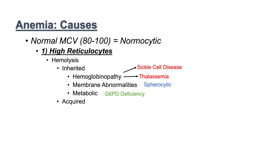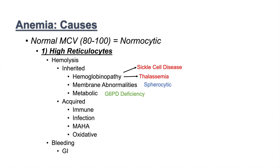The next subcategory is acquired hemolysis. Acquired causes include immune-related, infection-related, microangiopathic hemolytic anemia, and oxidative causes. The second large category in normocytic anemia with high reticulocytes is bleeding. Bleeding includes GI bleeding as one of the largest sources — this can be occult bleeding where we don't see it but it's occurring. There's also GU, or genitourinary, bleeding, which can also lead to a high reticulocyte normocytic anemia.